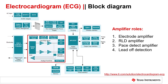This slide shows a typical ECG block diagram from the TI website, where one can click on each block and get recommended devices. For an ECG circuit, the specific amplifier roles include electrode amplifiers, RLD or right leg drive amplifier, pace detection amplifier, and lead-off detection. We will also see some recommended devices in the next slides.